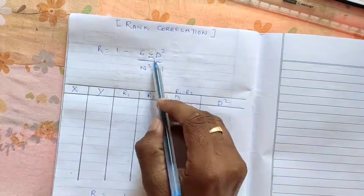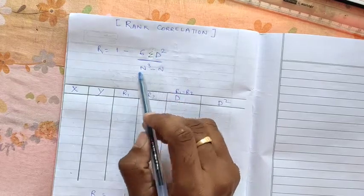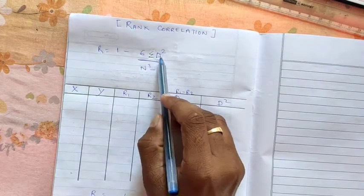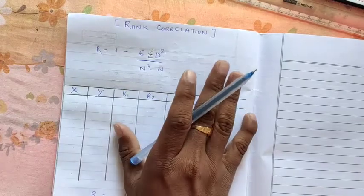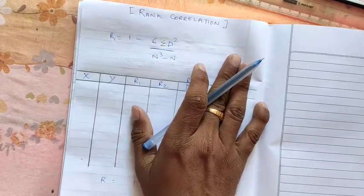And summation d square, so d we need to find. So in this type of question we need to find d. If you find d, our problem is solved. We can easily find Rank Correlation. So let us see the question.